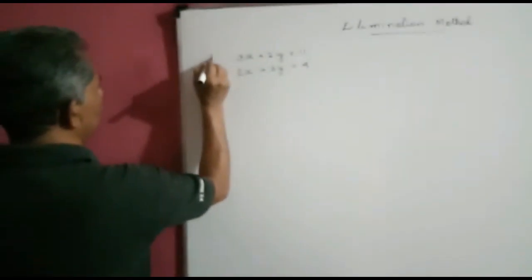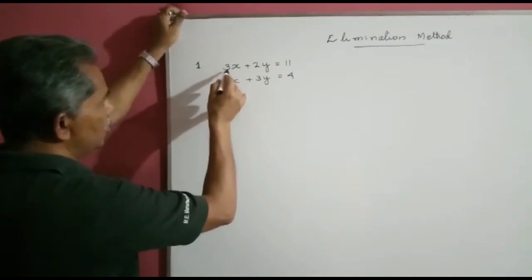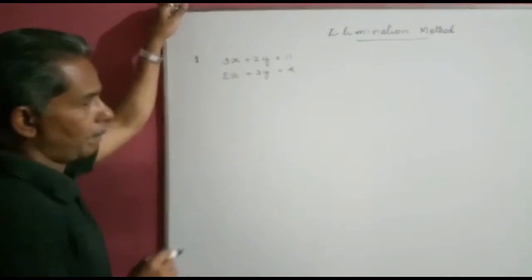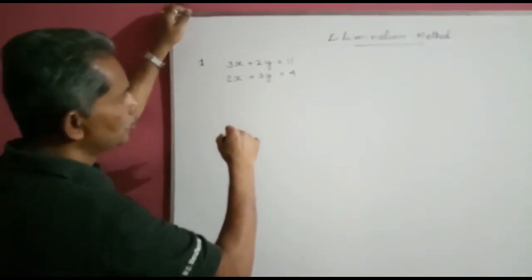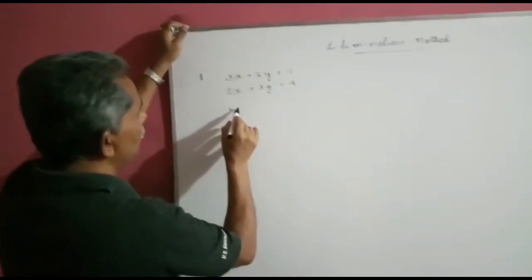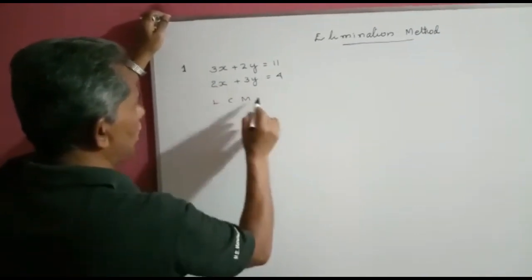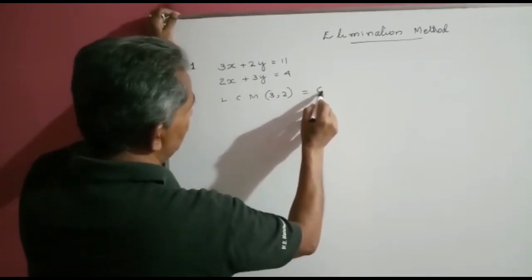First example: 3x plus 2y is equal to 11, and 2x plus 3y is equal to 4. We can make the coefficients of either x or y equal. For making the coefficients of x equal, we find the LCM of the coefficients of x, which are 3 and 2. Since both are prime numbers, their LCM is found simply by multiplying, so we want to make the coefficient of x equal to 6.